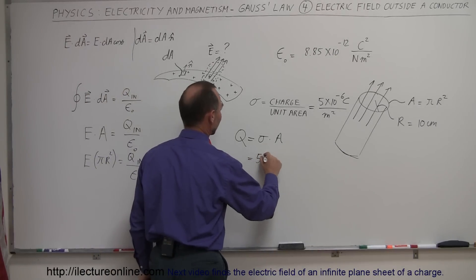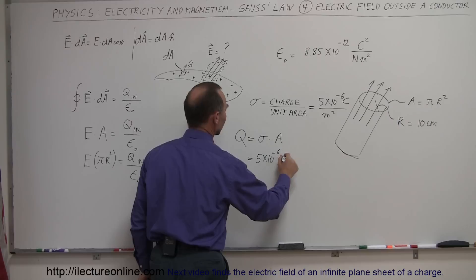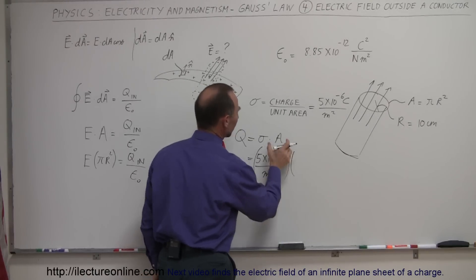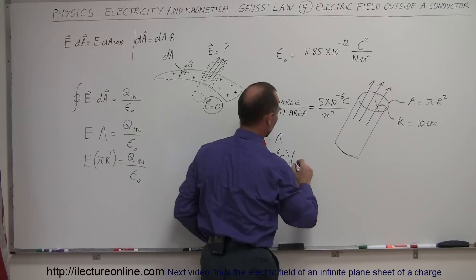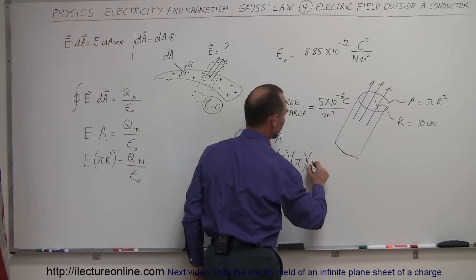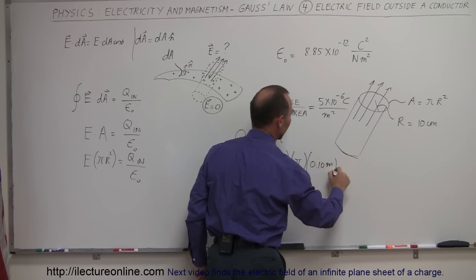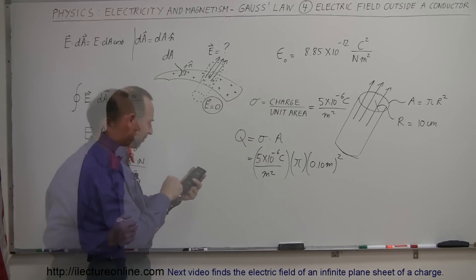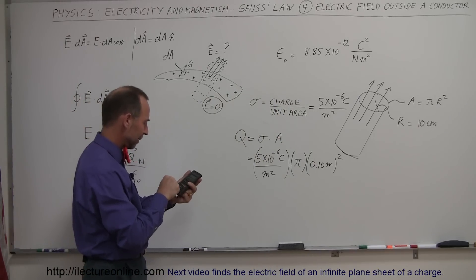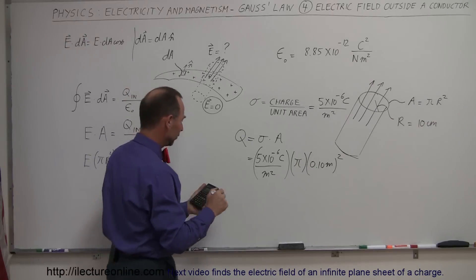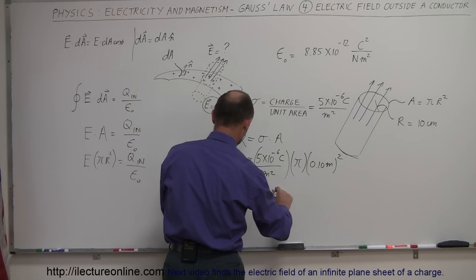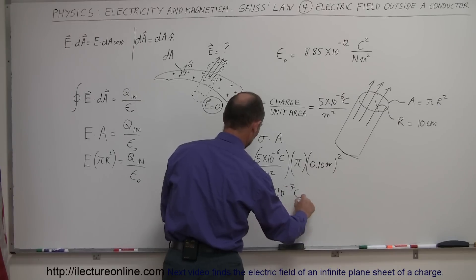Now we plug in: sigma is 5 times 10 to the minus 6 coulombs per square meter, times the area, which is pi times the radius squared — in this case 0.10 meters squared, or 0.01 m². So we get 5×10⁻⁶ times pi times 0.01, which equals a charge of 1.57 times 10 to the minus 7 coulombs.